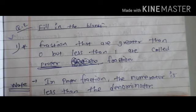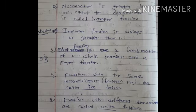Filling the blanks of chapter number fourth. First one, fraction that are greater than zero but less than one are called dash fraction. Okay? Aisa fraction ko kya kahenge? Proper fraction. There is other note for that. In proper fraction, the numerator is less than the denominator. Okay? Ismein numerator hai woh, denominator se chhota hota hai.